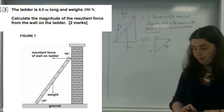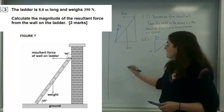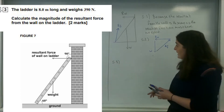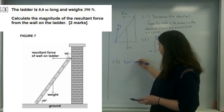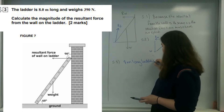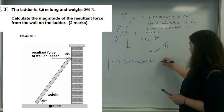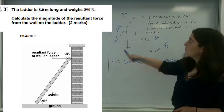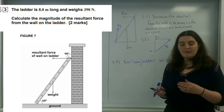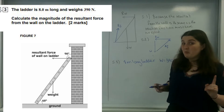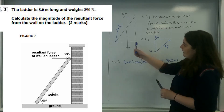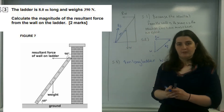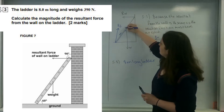So question 5.3 — and the reason I'm leaving this all up is because it will really assist me. 5.3 says the ladder is 8 metres long and weighs 390 newtons. If they're giving you a distance and a force, they normally want you to do something to do with moments. The weight always acts at halfway along, so this is 4 metres, and this here is another 4 metres.